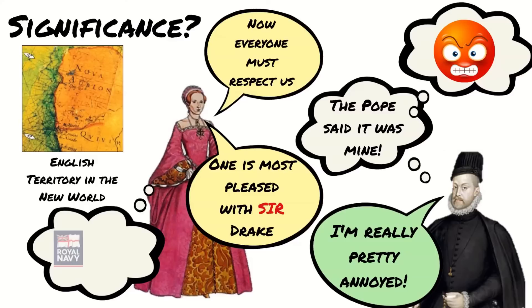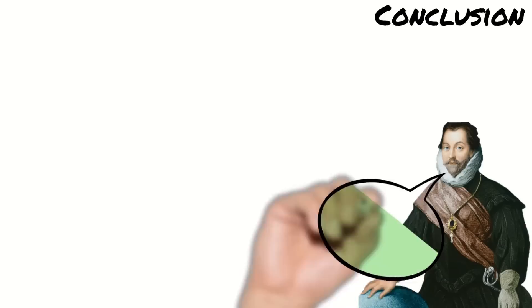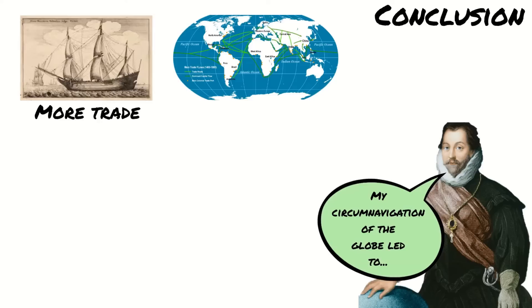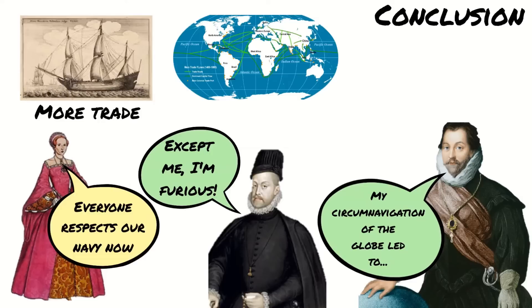The journey also increased England's reputation as a seafaring nation. As a result, Elizabeth's power overseas increased — she invested in the navy and England began to use sea battles as its main form of defence. The new conquest of Nova Albion meant that trading opportunities increased, and Drake's discoveries of new routes to China and the east made trading with existing countries easier. In conclusion, Drake's circumnavigation of the globe increased trade opportunities bringing new wealth, it increased England's standing in the world, and it really annoyed the Spanish, leading to increasing conflict with England's old foe.